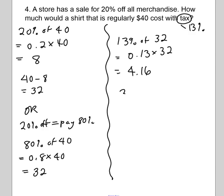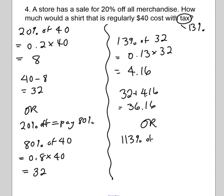The total cost of the shirt is the sale price plus the tax: $32 plus $4.16 equals $36.16. Or, if you want to skip a step: since you're paying 100 percent plus 13 percent tax, you're actually paying 113 percent of the sale price. Turn 113 percent into a decimal and multiply by the sale price, and you go directly to the answer. In Ontario, we pay 113 percent when we include the tax.